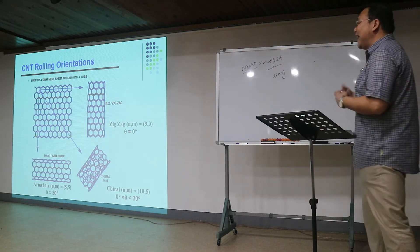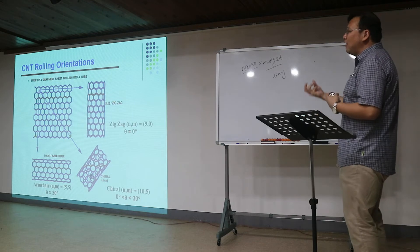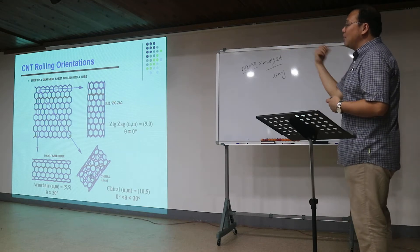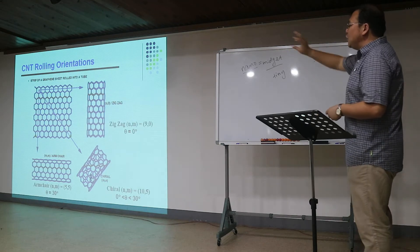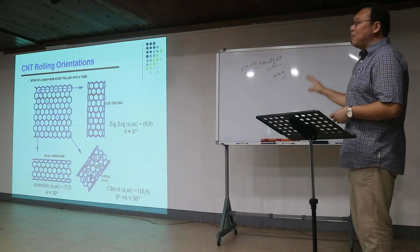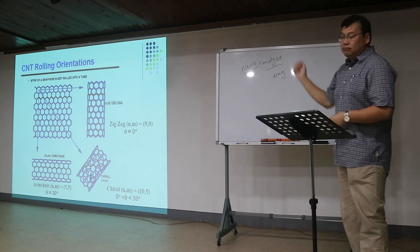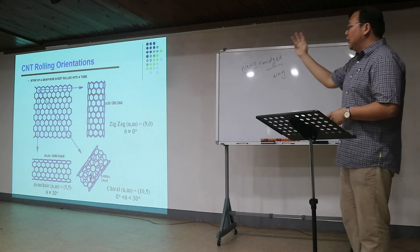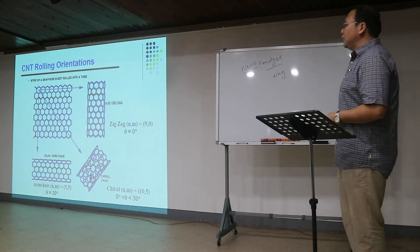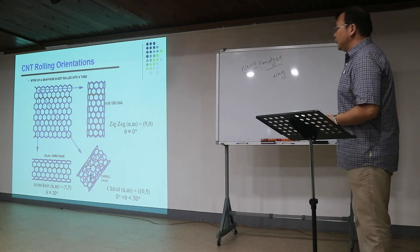So depending on orientation and how you roll up the carbon nanotube, you may end up with different patterns for the carbon nanotube structures.